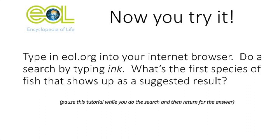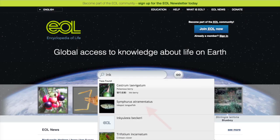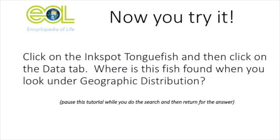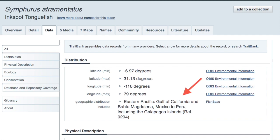Now that you have had a chance to see what the Encyclopedia of Life has to offer, try a search. Using the search bar, type the word ink. What's the first species of fish that you see on the list of results? Typing in ink lists the ink-spot-tongued fish as the first fish on the list of results. Now let's explore a little bit more about this species. Click on the Ink-spot-tongued fish entry and then click on the Data tab. Where is this fish found when you look under Geographic Distribution? The Data page reveals that this fish is found in the Eastern Pacific.